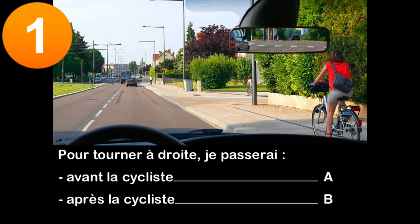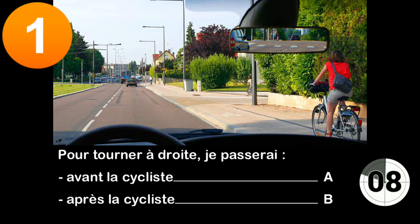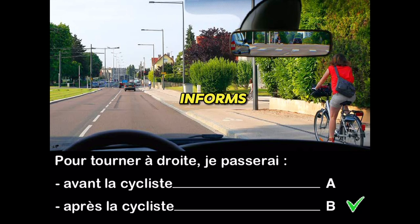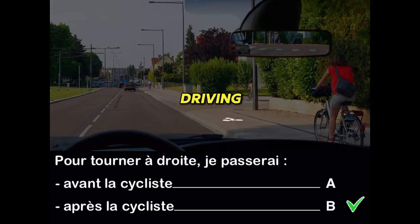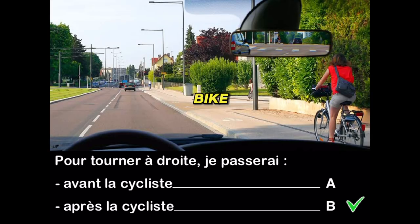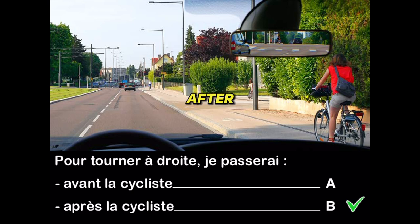Question one: to turn right, I will pass before the cyclist (A) or after the cyclist (B)? This pictogram informs me that the cyclist is driving on a bike path. When a driver who changes direction crosses a bike path, he must give way to cyclists who drive in both directions. So I'll pass after the cyclist.